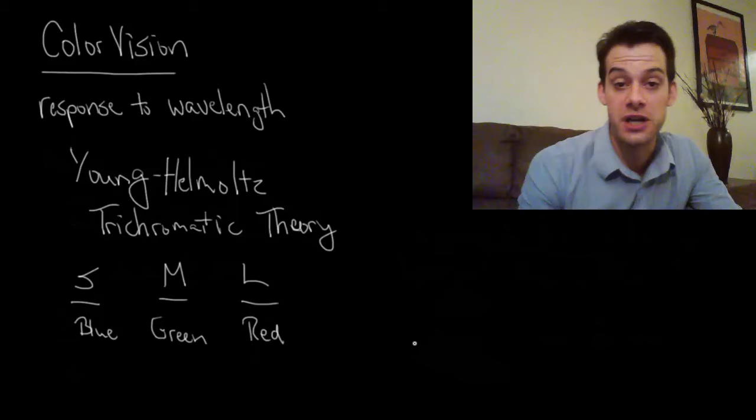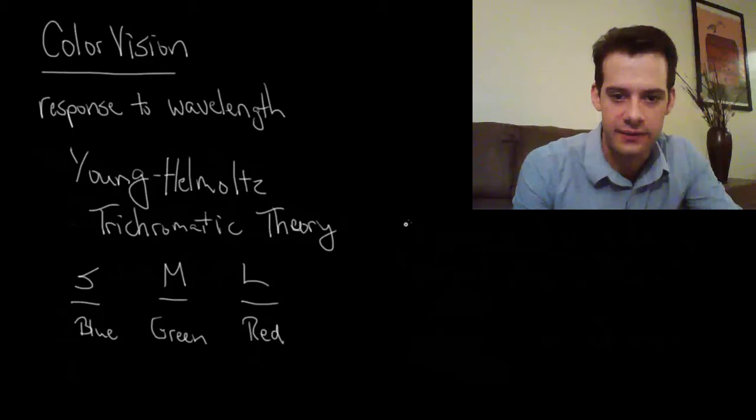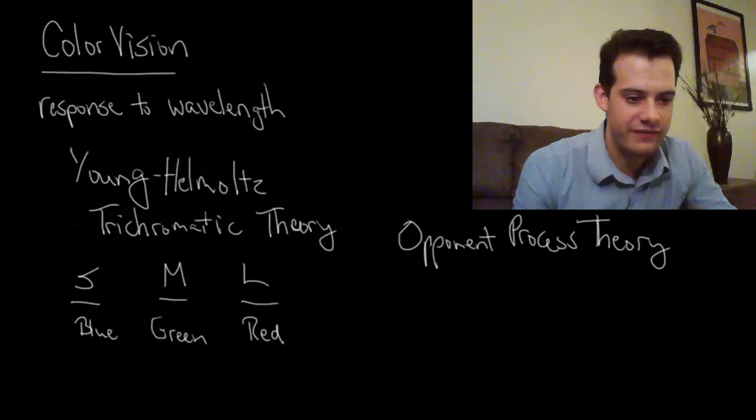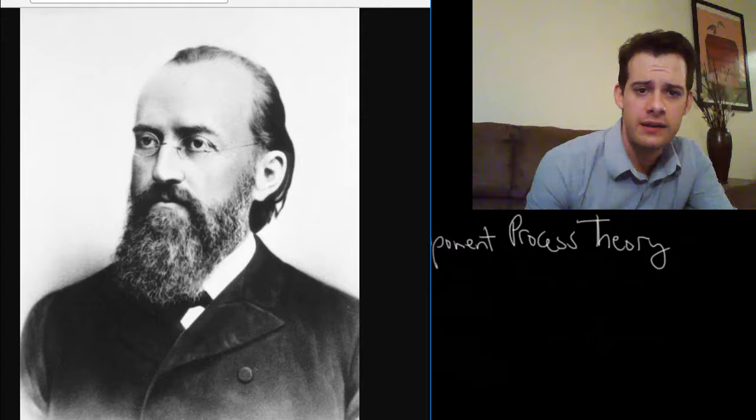So we need an additional theory which complements the trichromatic theory. And this is the opponent process theory. So opponent process theory was first proposed by a guy named Ewald Hering who is a German physiologist. And so Hering figured out that